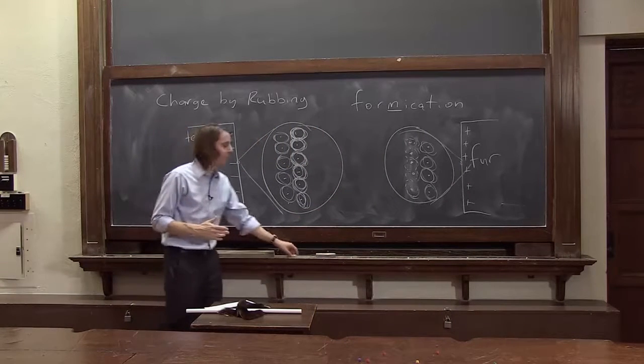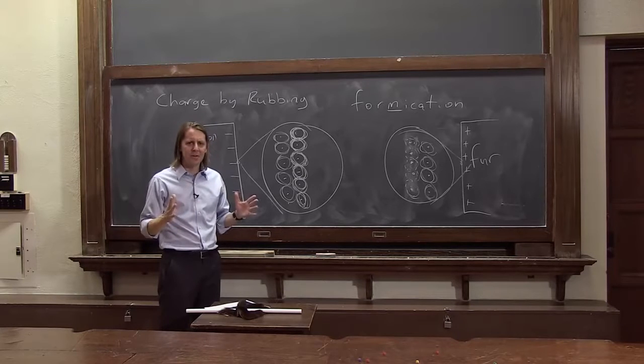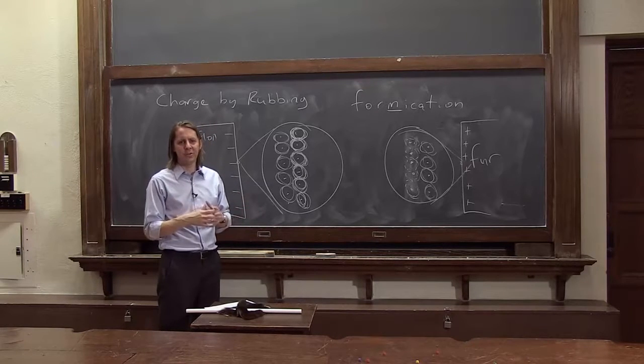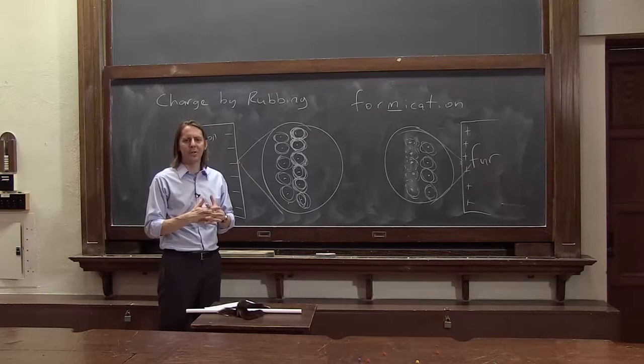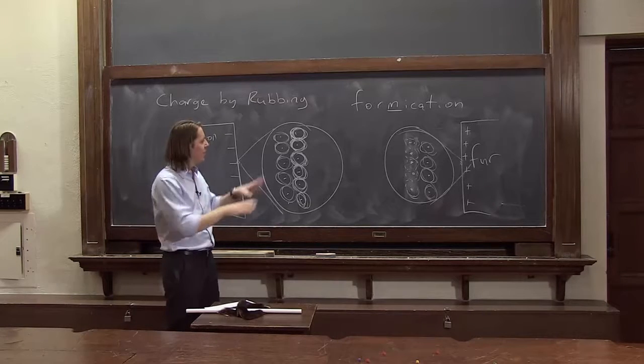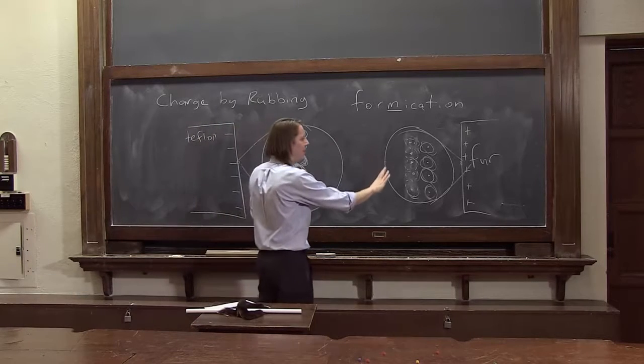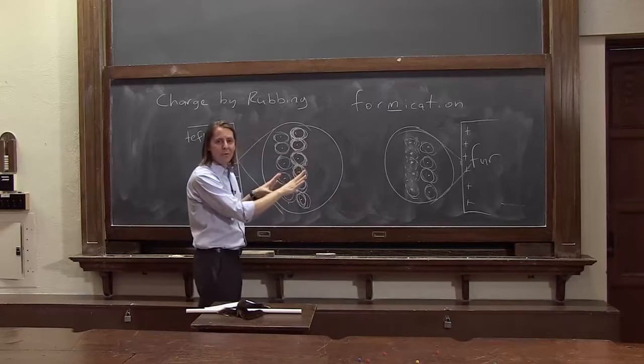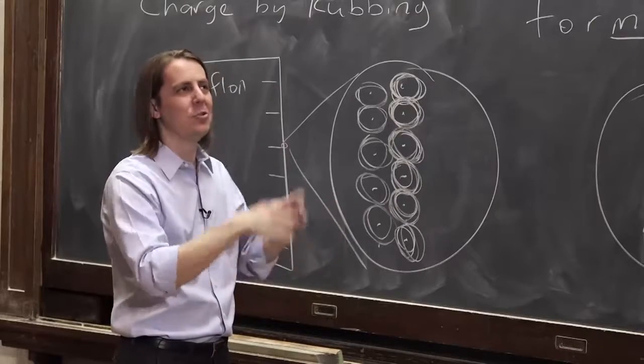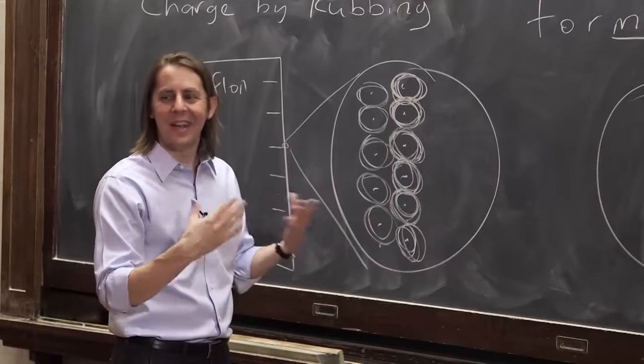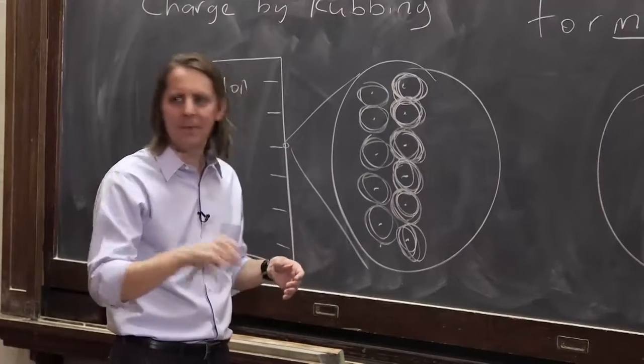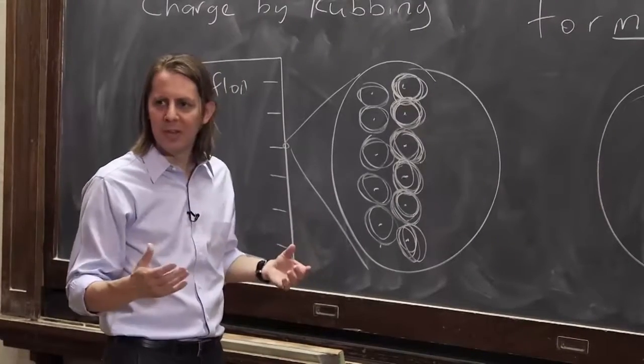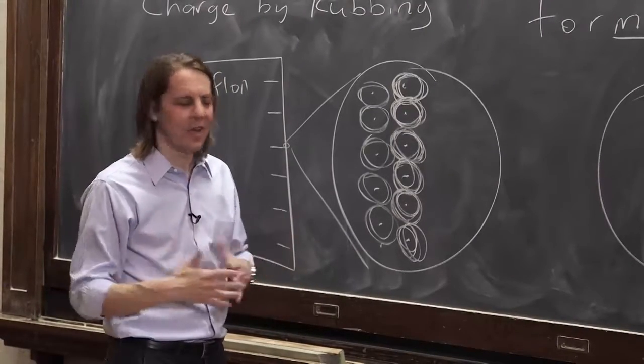This is called the triboelectric effect. And unfortunately, it's very complicated. You can't just calculate how much charge is going to transfer in a triboelectric experiment. It depends on the exact surface chemistry, the previous surface treatment, and the previous surface chemistry. It depends on the humidity in the air, what kind of gas is in the air, how hard you rub, how fast you rub, what kind of fur it is. It depends on a lot of things. It's not really an exact science.